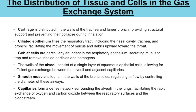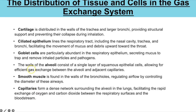You need to know the distribution of tissues and cells in the gas exchange system. Cartilage is in the walls of the trachea and larger bronchi, providing structural support to prevent collapse. Ciliated epithelium is in the nasal cavity, trachea, and bronchi, sweeping mucus out of the lungs. Goblet cells throughout the respiratory epithelium secrete mucus to trap inhaled particles. The alveoli walls consist of a single layer of squamous epithelial cells for efficient gas exchange. Smooth muscle in the bronchioles regulates airflow by controlling airway diameter, and capillaries form a dense network surrounding the alveoli to maintain the concentration gradient and facilitate rapid gas exchange.